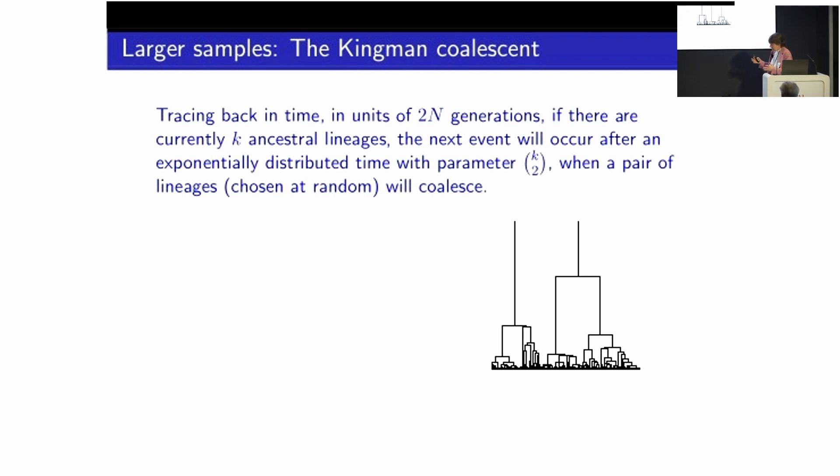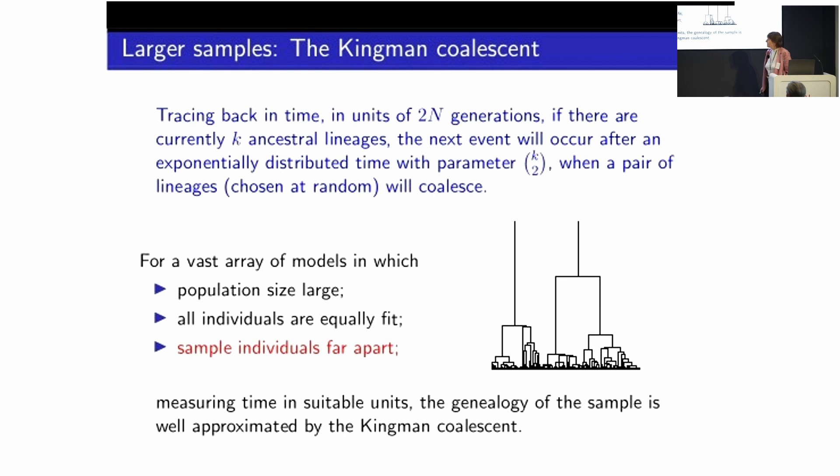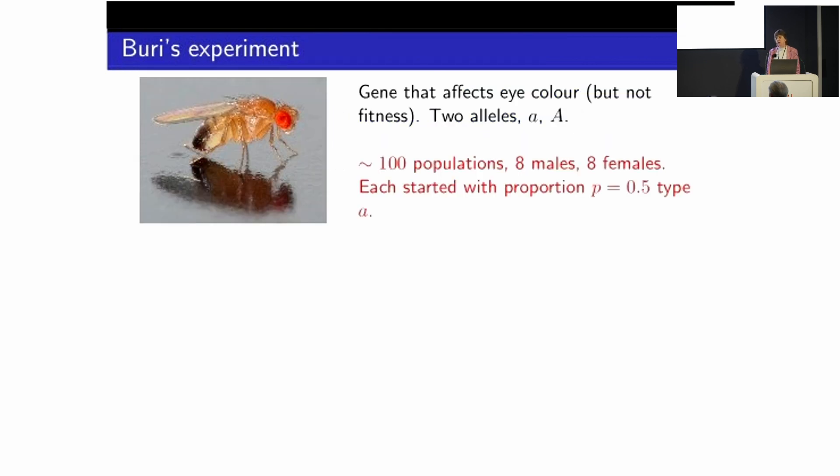This is a projection of something that's known as Kingman's coalescent which Kingman introduced in 1982 and it's really the workhorse of statistical genetics. And one of the reasons for that is that for a vast array of mathematical models as long as the population size is large and all individuals are equally fit, then measuring time in suitable units the genealogy of the sample is going to be of this shape. It's going to look like a Kingman coalescent. So there's a universality to the Kingman coalescent. But of course I said that for models and you'd probably be more comforted if I could say it for a natural population. And let's begin not with a natural population. No natural population is going to evolve according to a Wright-Fisher model. But we can make laboratory populations evolve according to something a bit like a Wright-Fisher model.